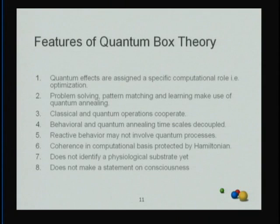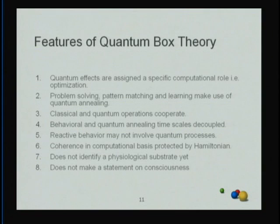It's important to understand what the computational basis might be and how coherence in the computational basis might be protected by an appropriate Hamiltonian describing dynamics in cellular and intracellular space. The last two points are flaws in the theory I'm suggesting so far — I'm not able at this moment to point to a physiological substrate. And at this point, I'm looking at problem solving, creativity, and learning, and do not yet make a statement on how this relates to consciousness.